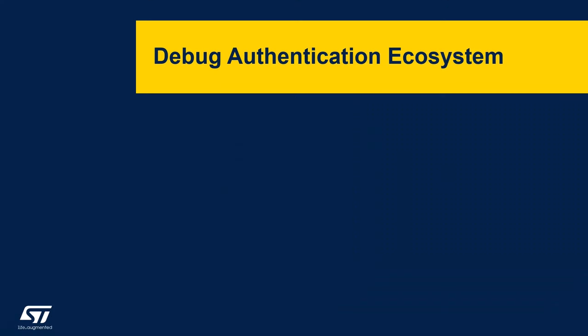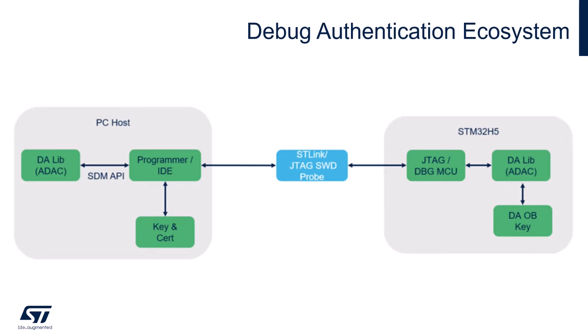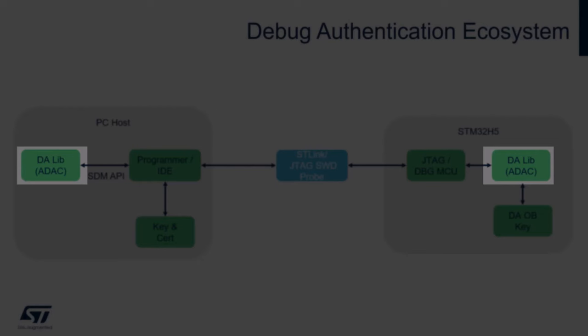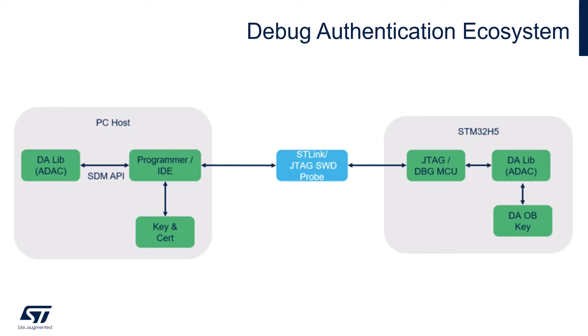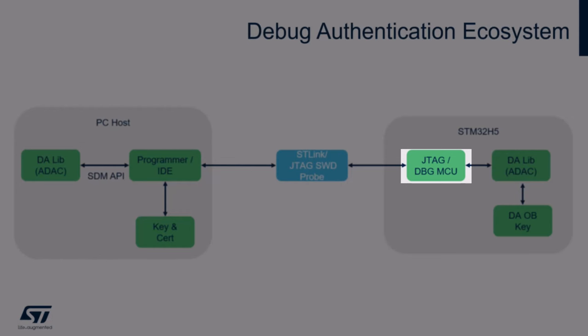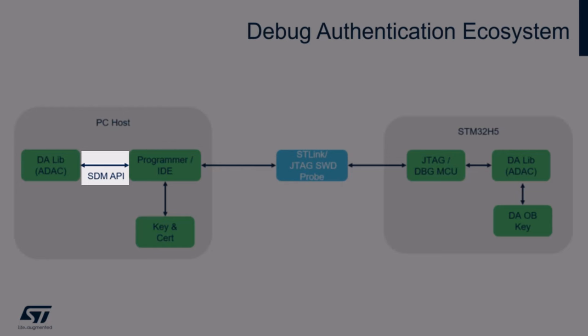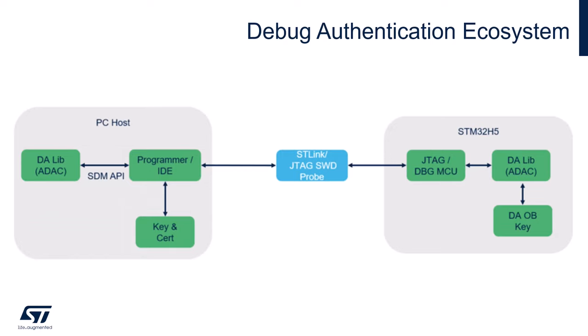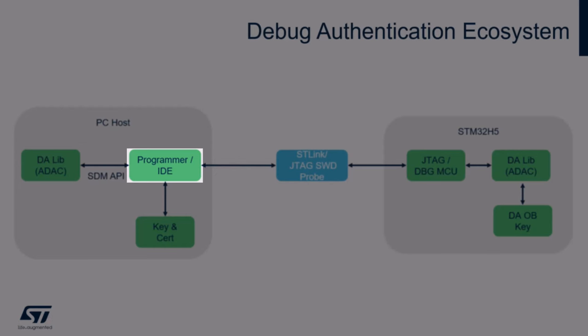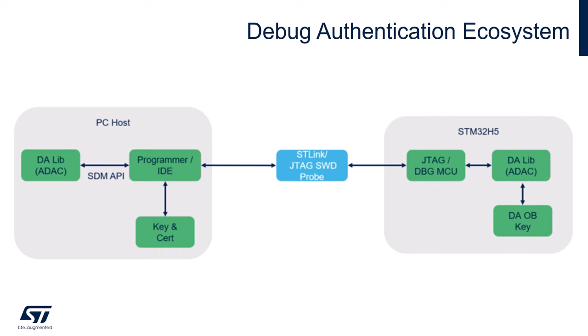Now let's understand the ecosystem that facilitates debug authentication. Debug authentication operates on the ARM PSA ADAC secure protocol — where ADAC stands for Authenticated Debug Access Control — and utilizes the STM32 debug access port 0 (DAP 0) and the debug MCU IP for communication. The host PC internally utilizes the secure debug manager SDM library through the programmer or IDE. We are going to look at how the components of the ecosystem interact with each other in the next few slides.